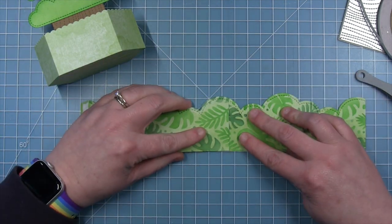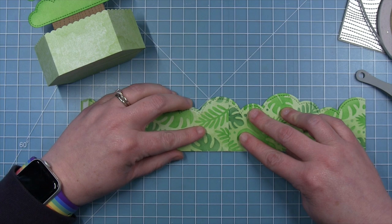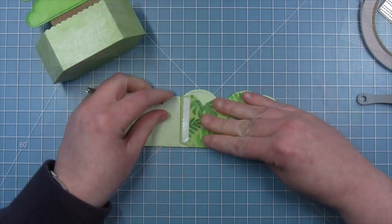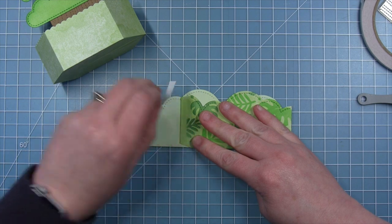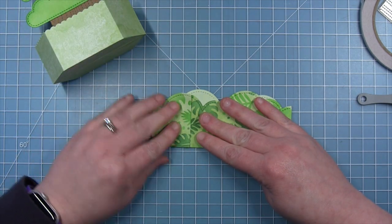So I like to line it up straight on my grid mat and then line up the two seams. And then you can just fold it over and complete that wraparound box.